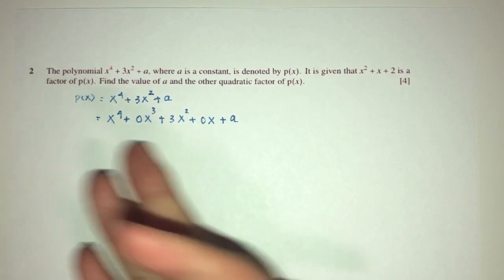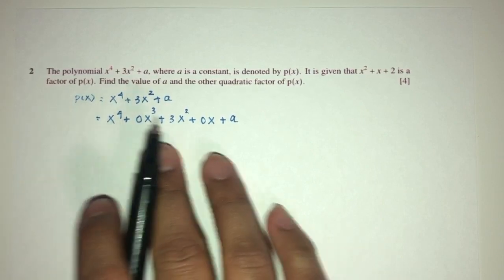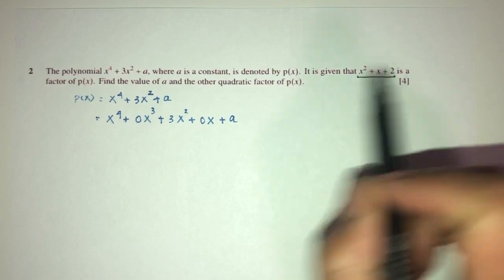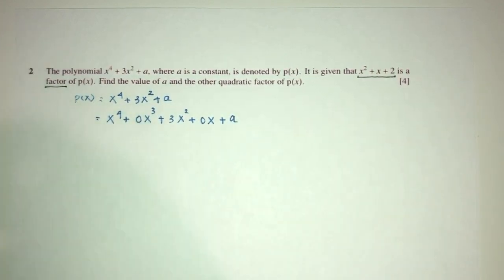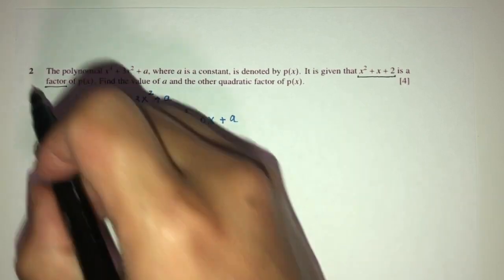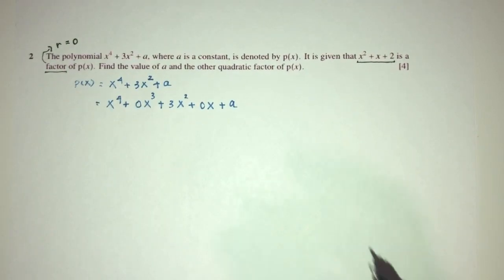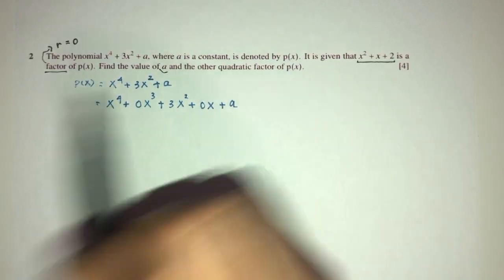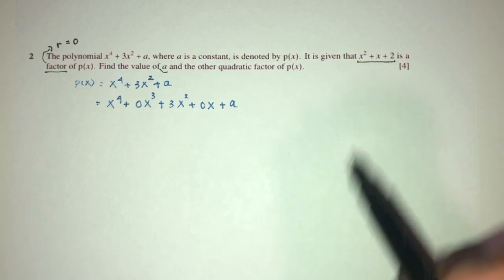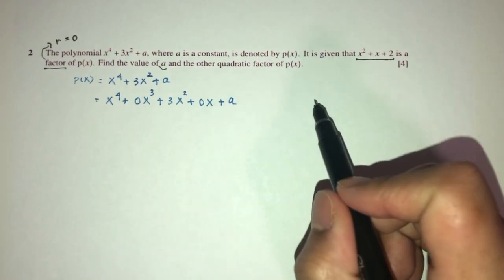Then we have 3x square plus 0x plus a. The reason why I do this is because it will be helpful if we carry out long division in this question. But first thing first, this is p of x. It is given that this thing right here is a factor of p of x. What does that mean? When something is a factor of something, it divides them perfectly. Hence, the remainder will have to be 0. Using that information, find the value of a and the other quadratic factor of this one. To find the other one, we have to carry out long division to first find the value of a.